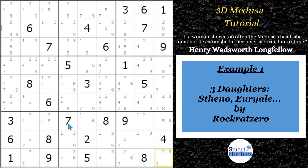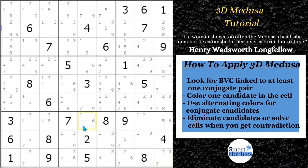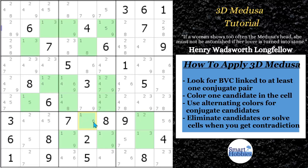What you want to do is pick a cell that has a conjugate pair. This one is a conjugate pair with this one right here because there's only two ones in row seven, and also it's a conjugate pair with the six.